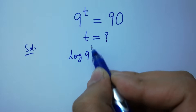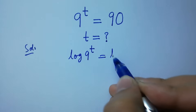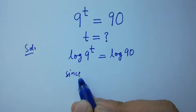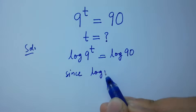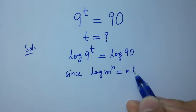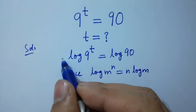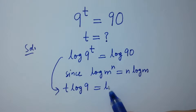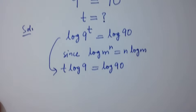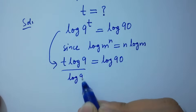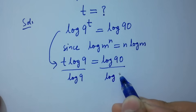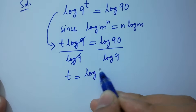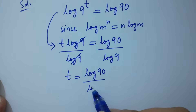Log 9 to the power t equals log 90. Since log m to the power n equals n log m, then it will be t log 9 equals log 90. Divide by log 9 on both sides. Log 9 and log 9 cancel, so t equals log 90 over log 9.